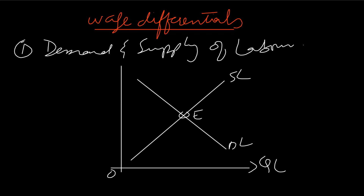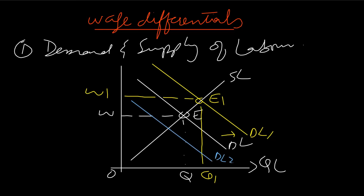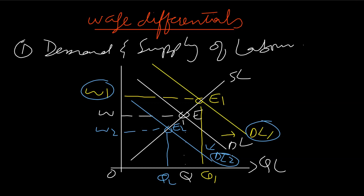Initially, equilibrium is at point E where wage rate is W and employment is Q. Workers in high demand see the demand for labor shift to the right, so they receive high wages. The new equilibrium is at E1 where wage rate rises to W1 and employment rises to Q1. On the other hand, workers with low demand see the demand curve shift left to DL2, giving a new equilibrium at E2 with wage rate W2 and employment Q2. Workers in high demand receive high wages; workers with low demand receive low wages.